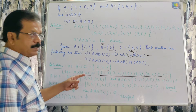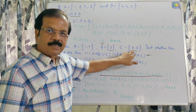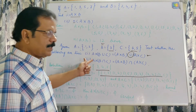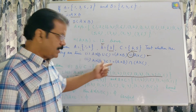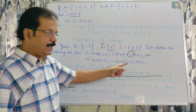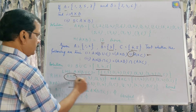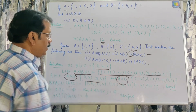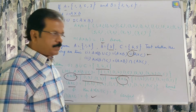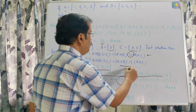For the second part, verify A × (B ∩ C) = (A × B) ∩ (A × C). B ∩ C is the null set because no element is common in B and C. Therefore the Cartesian product of A with the null set is the null set. On the right-hand side, (A × B) ∩ (A × C) — none of the elements are common — so this is also the empty set. Left-hand side equals right-hand side, so this property is also verified.